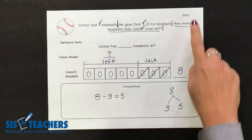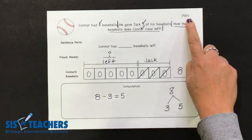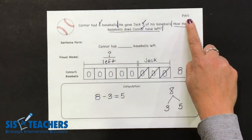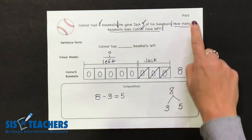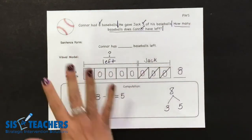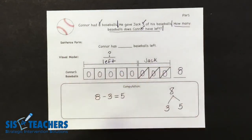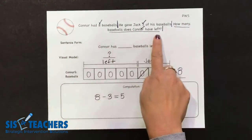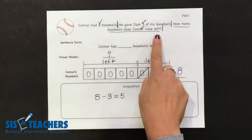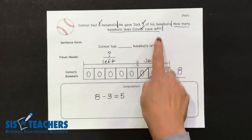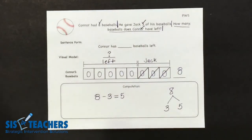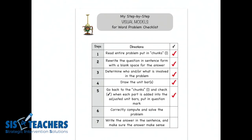As kids are learning part-whole subtraction — maybe it's part-whole addition or part-whole missing addend — you want to teach them in a certain way but also mix it up so kids aren't always just going 'oh, I just subtract.' Now that we have the computation done, we can go to our checklist at number six, which says correctly compute, and check that off as well.